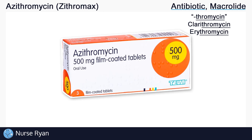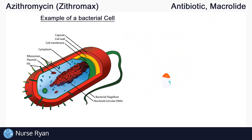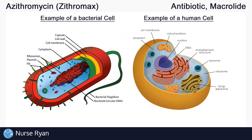To understand how macrolides work, we first have to understand a bit about the anatomy of cells. On the left is an example of a bacterial cell, and on the right an example of a human cell. You can see all their different little organelles, which each carry out specific functions that keep the cell alive.